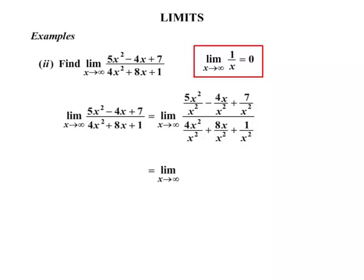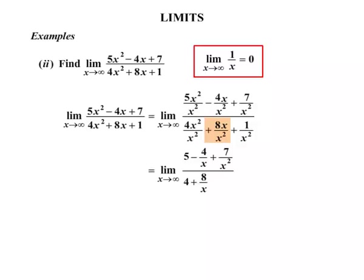Let's see what happens. Taking the limit as x approaches infinity, we can simplify: x squared cancels to give 5, and we have minus 4 over x, plus 7 over x squared — all over 4 (from 4x squared over x squared), plus 8 over x, plus 1 over x squared.